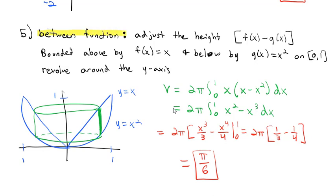We have to be careful: when we're between functions, we adjust the height — the f(x). When we revolve around another line, we adjust the radius — the x. Let's wrap up by doing one example that combines both of those into one problem.